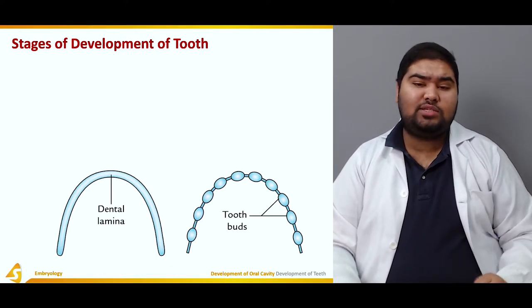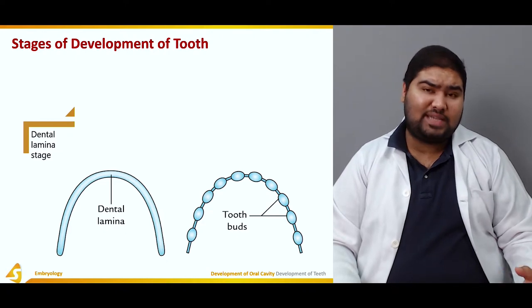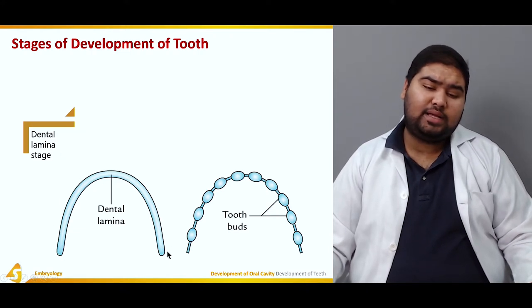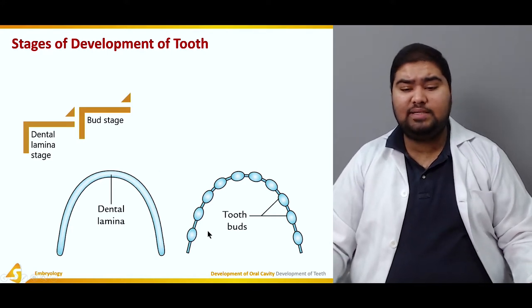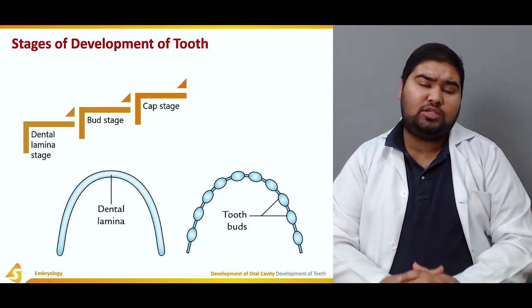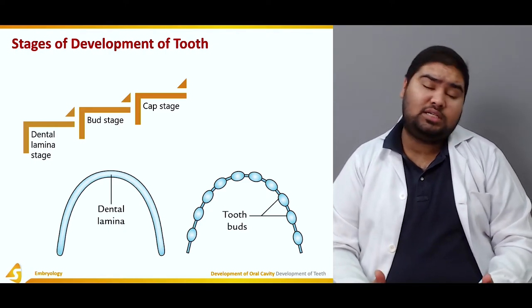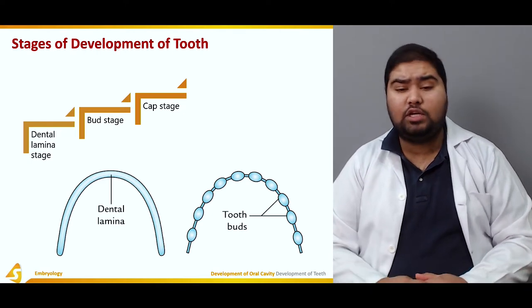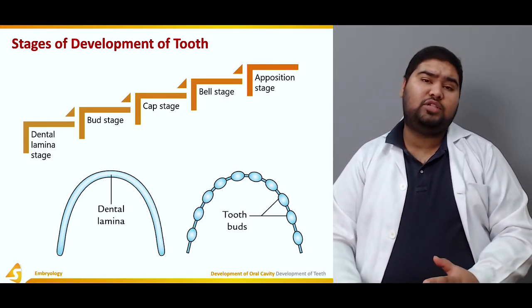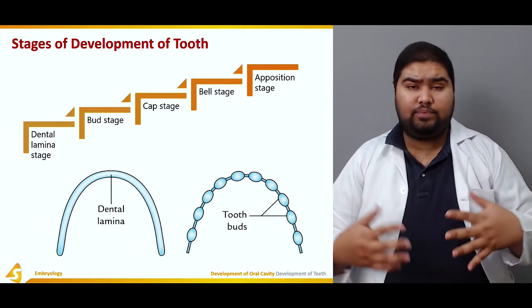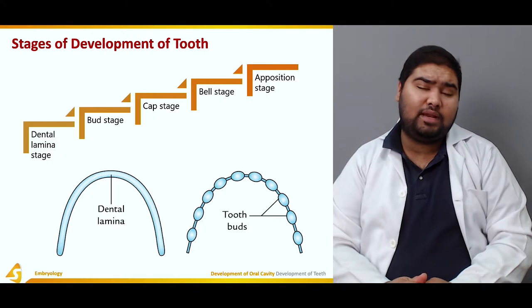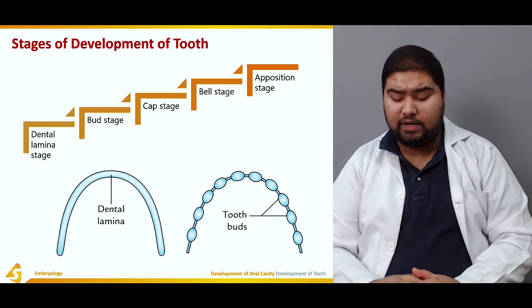There are five different stages of tooth development. First, we have the dental lamina stage in which an outline has been formed. Then we have the bud stage in which various tooth buds have been formed, about 10 in number. Then we have the cap stage in which the tooth part is invaginated by the surrounding mesenchyme. Then we have the bell stage in which proliferation is rapidly taking place, and finally we have the apposition stage. These stages give an idea of how the tooth develops and what are the various important factors that help in its development.